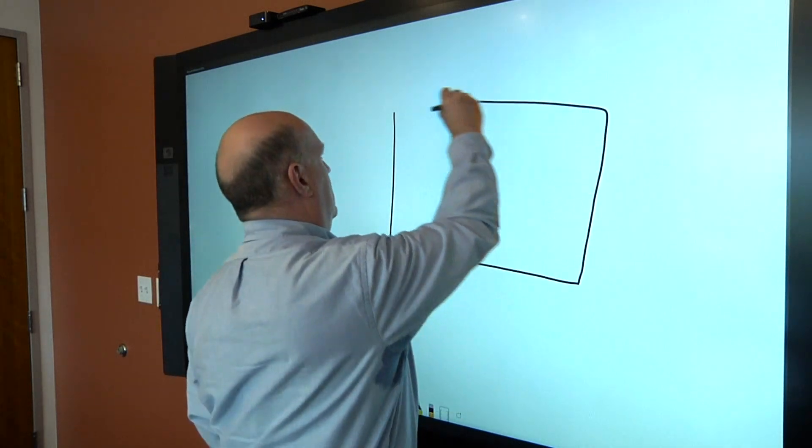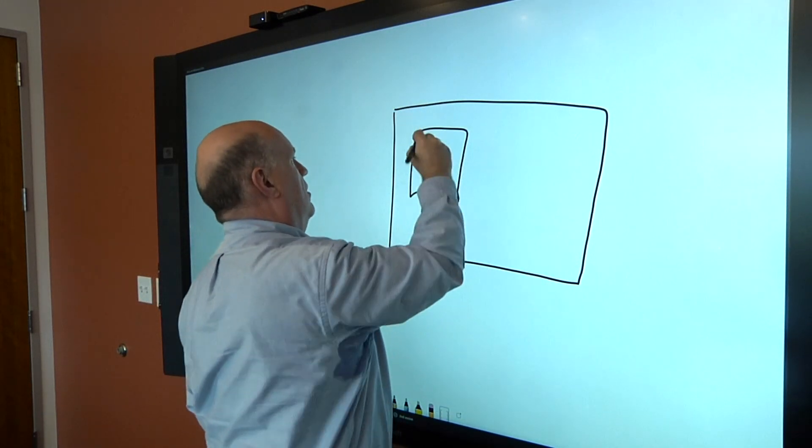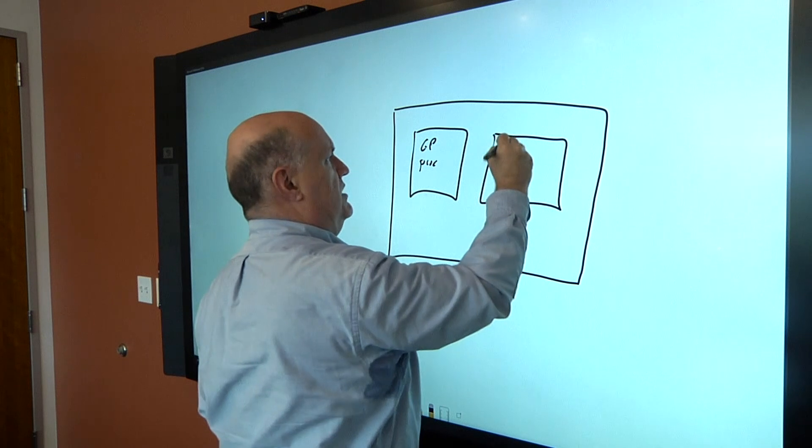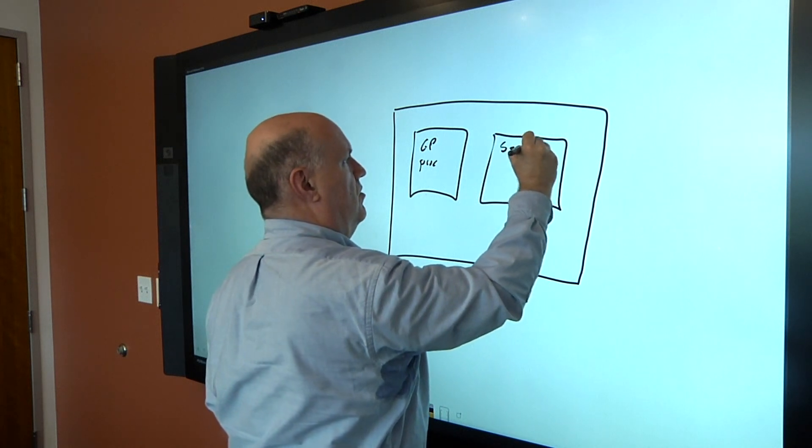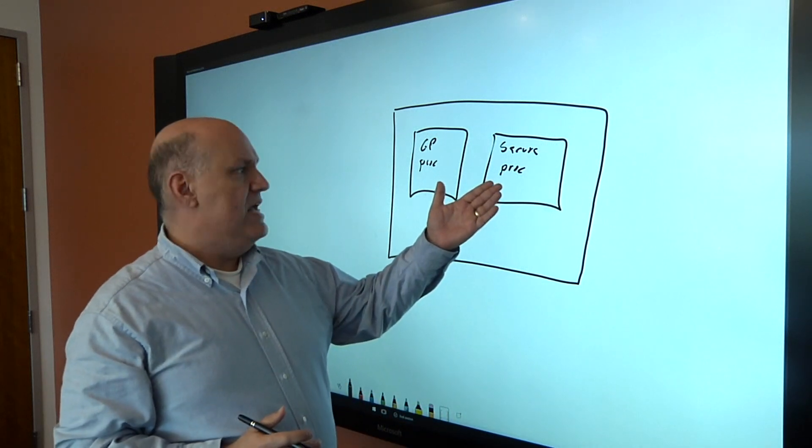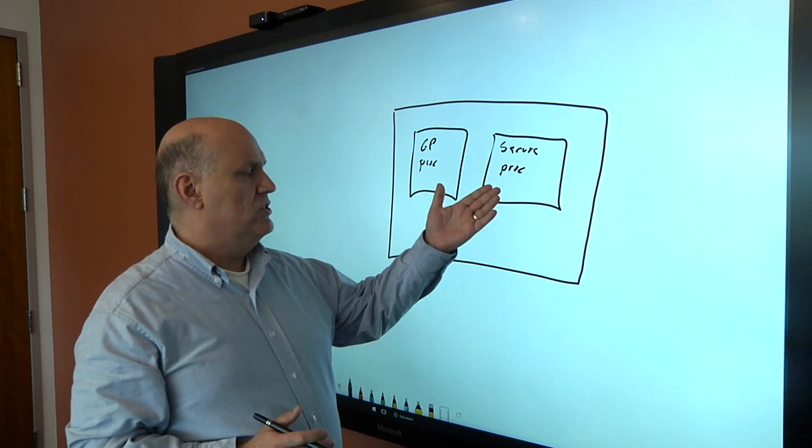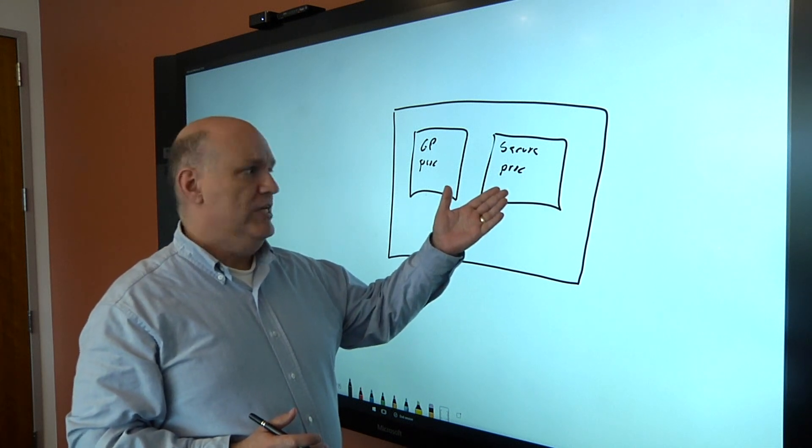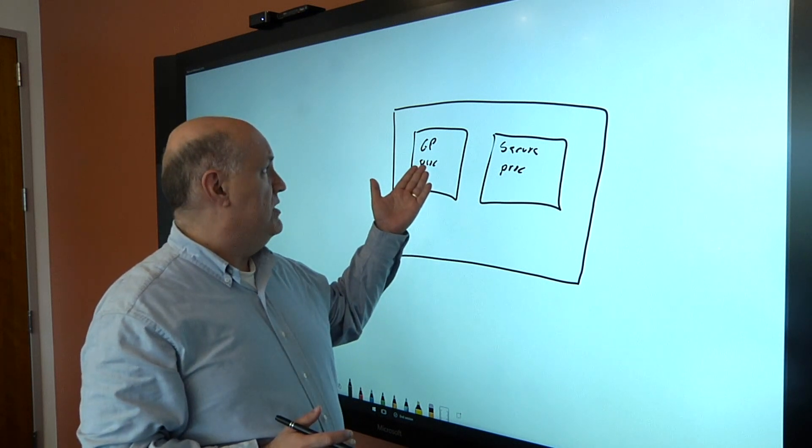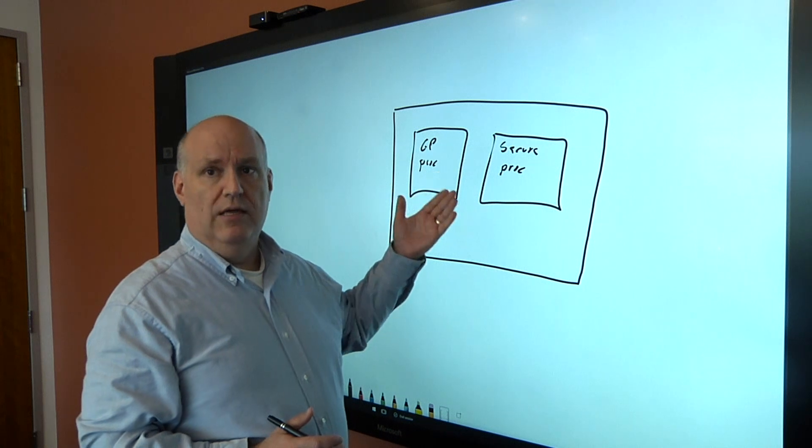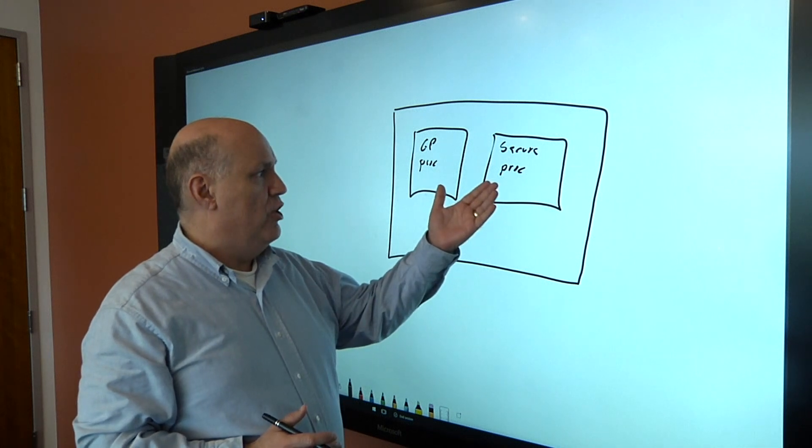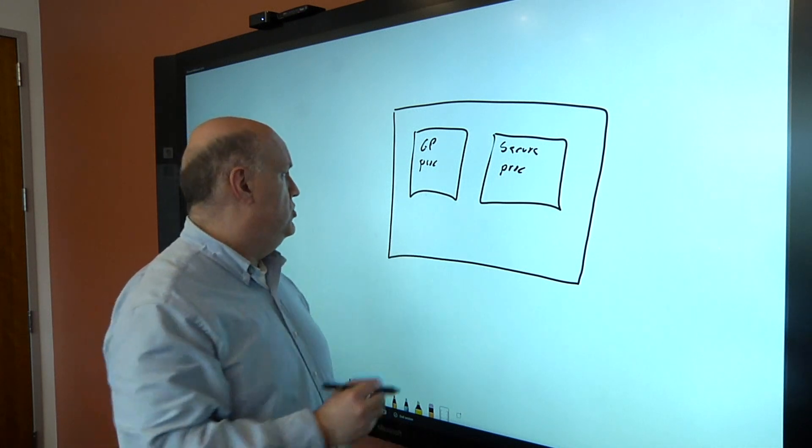So we can do something like this. You have a large system, and this is very simple. But you have your sort of general purpose processing. And then in a separate domain, you have your secure processing. And what I'm going to do is say, okay, I'm going to move all of my keys. I'm going to move all of my certificates. I'm going to move decisions about access to resources. I'm going to move all that into the secure processor.